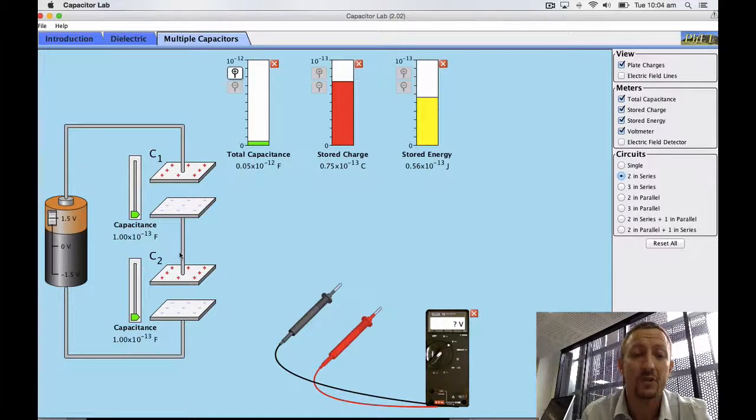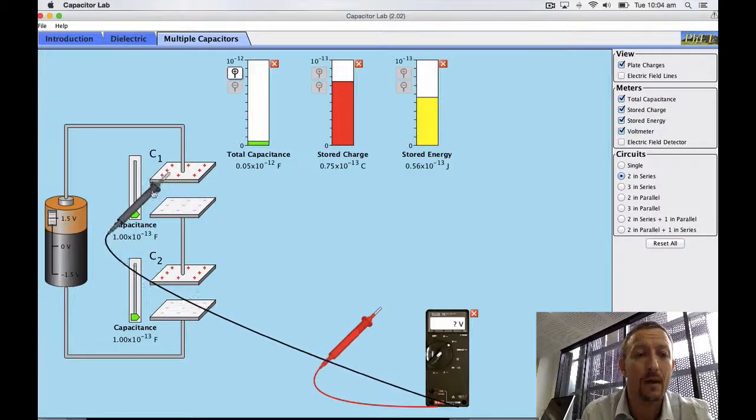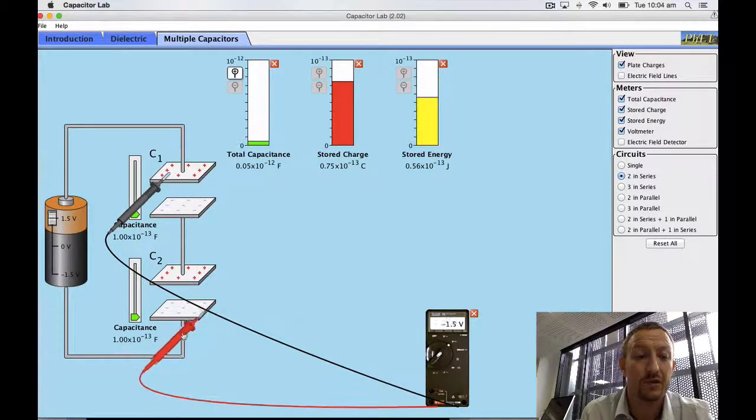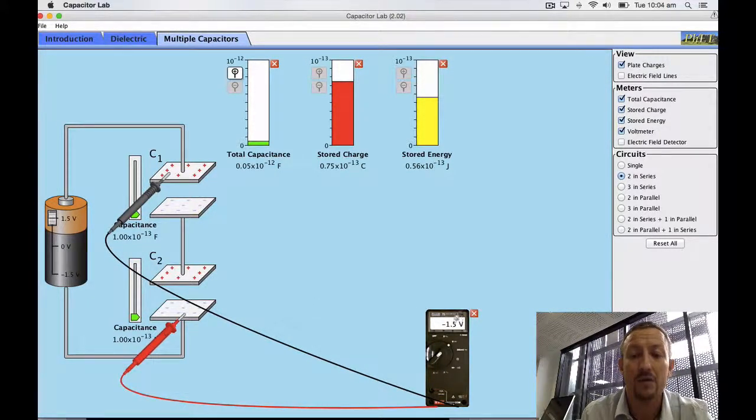Now what else do we know? Well, we know we've got 1.5 volts across here. So if I check my potential difference across the two capacitors, I also see that I've got 1.5.